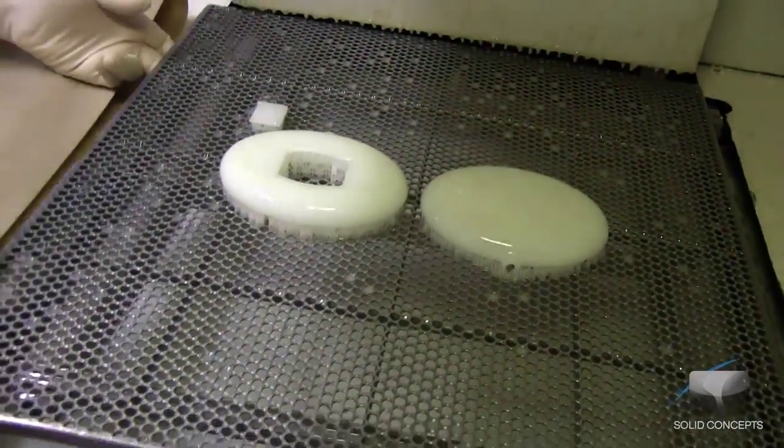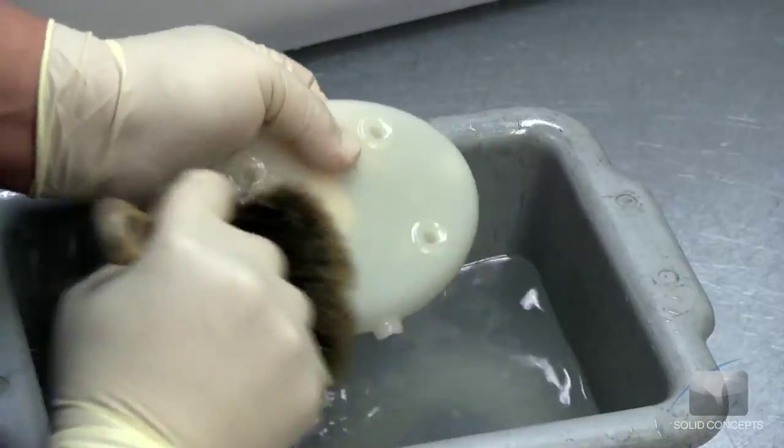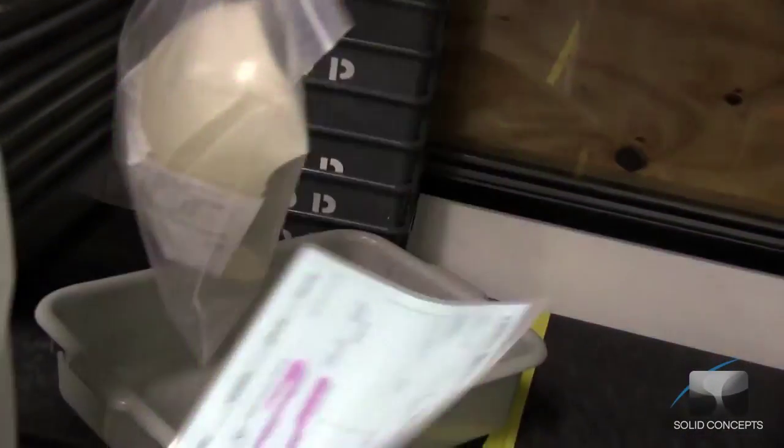The completed part is then carefully removed from the liquid and separated from the platform. A chemical bath removes excess resin and the part is cured in an ultraviolet oven. Any support structures are removed at this time.